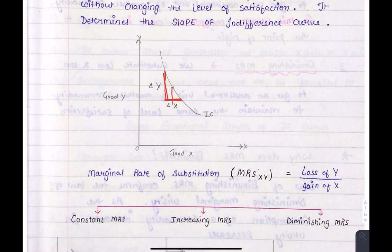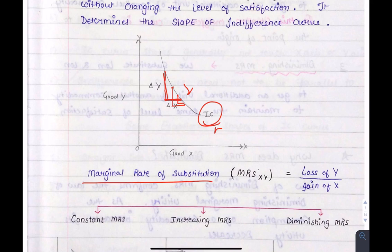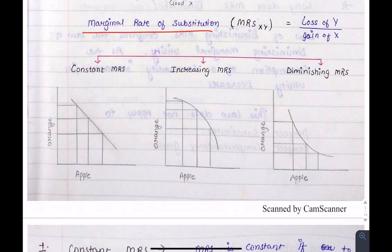If you need to increase Y, then X will reduce. So in short, MRS will decrease — that's why the IC curve is downward sloping. Marginal rate of substitution can be constant, increasing, or diminishing, and in these three cases the shape will be different. In the constant case, it is a straight downward sloping line showing equal MRS.